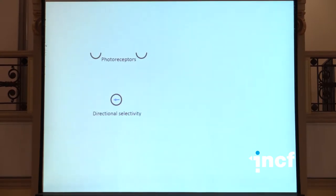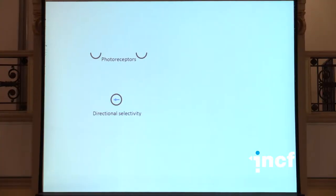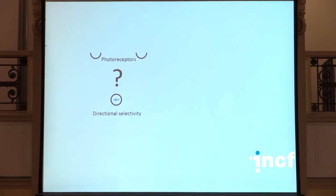Visual motion detection is an ethologically critical computation for both predators and prey, for invertebrates and vertebrates alike. The central issue in the field is that a single photoreceptor reports light intensity in only one point in the visual field, and therefore cannot tell the difference between variations in light level and motion in one or the other direction. Yet the signals coming from multiple photoreceptors are combined somehow to yield a response in a downstream neuron that exists only to one direction of motion — left, in this case.